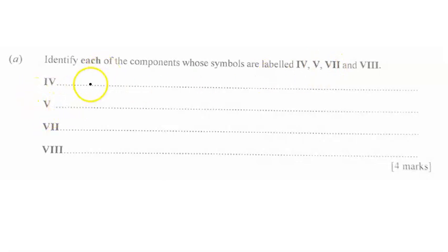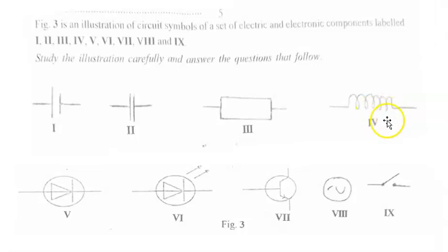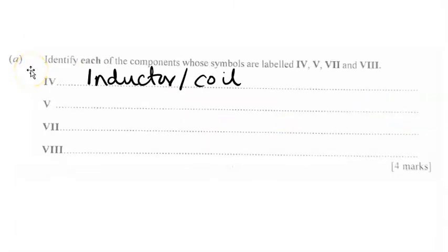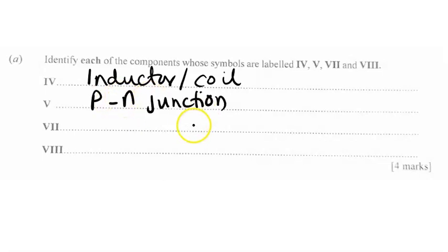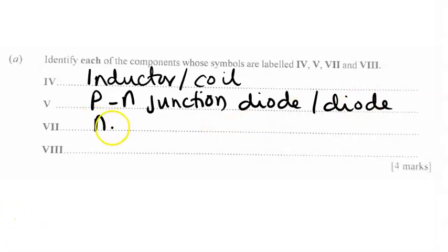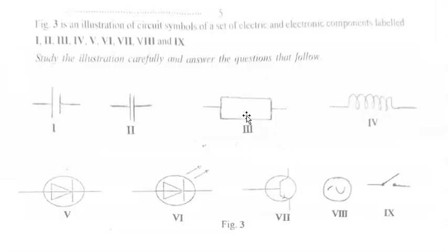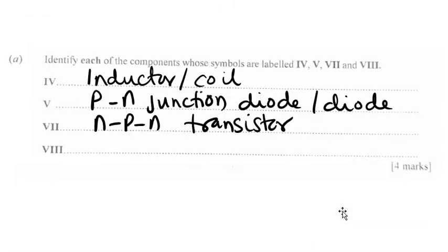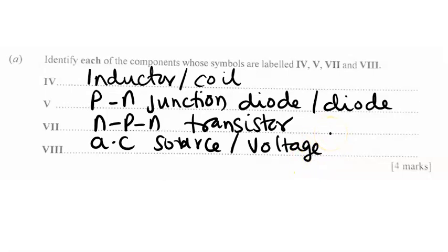As per the diagram, IV represents an inductor — you can say coil. V is a PN junction diode. VIII is an NPN transistor. And then VIII is an alternating current source — you can simply say AC source or AC voltage, and you get the full mark. One mark is awarded for each of the four components.